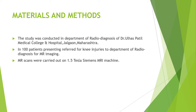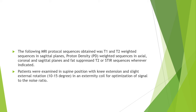MRI scans were carried out on a 1.5 Tesla Siemens MRI machine. The MRI protocol sequences obtained were T1 and T2 weighted sequences in the sagittal plane, proton density weighted sequence in axial, coronal, and sagittal planes, and fat-suppressed T2 or STIR sequence whenever indicated. Patients were examined in supine position with knee extension and slight external rotation of 10 to 15 degrees in an extremity coil for optimization of signal-to-noise ratio.